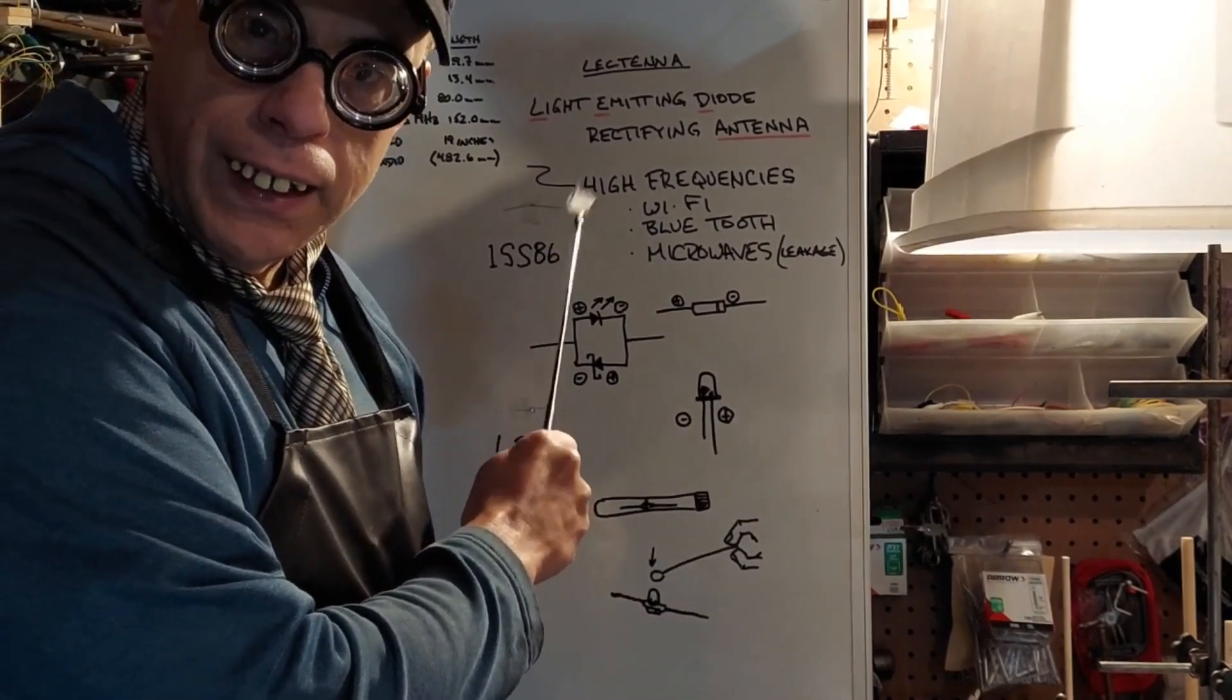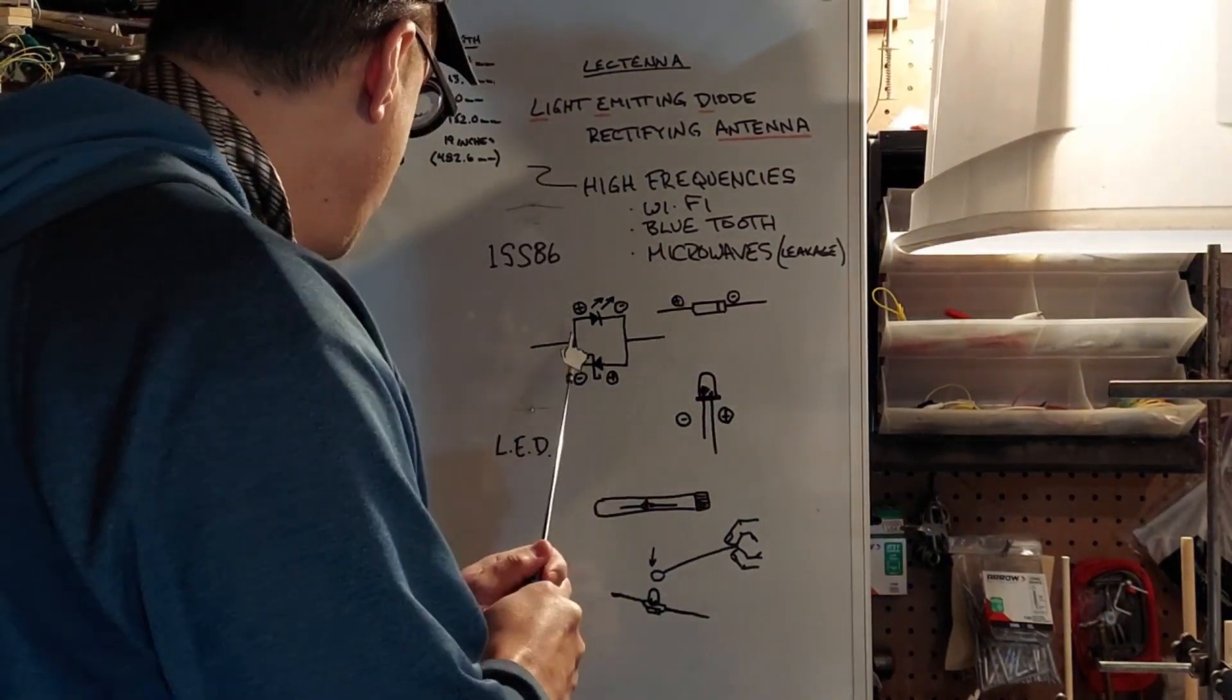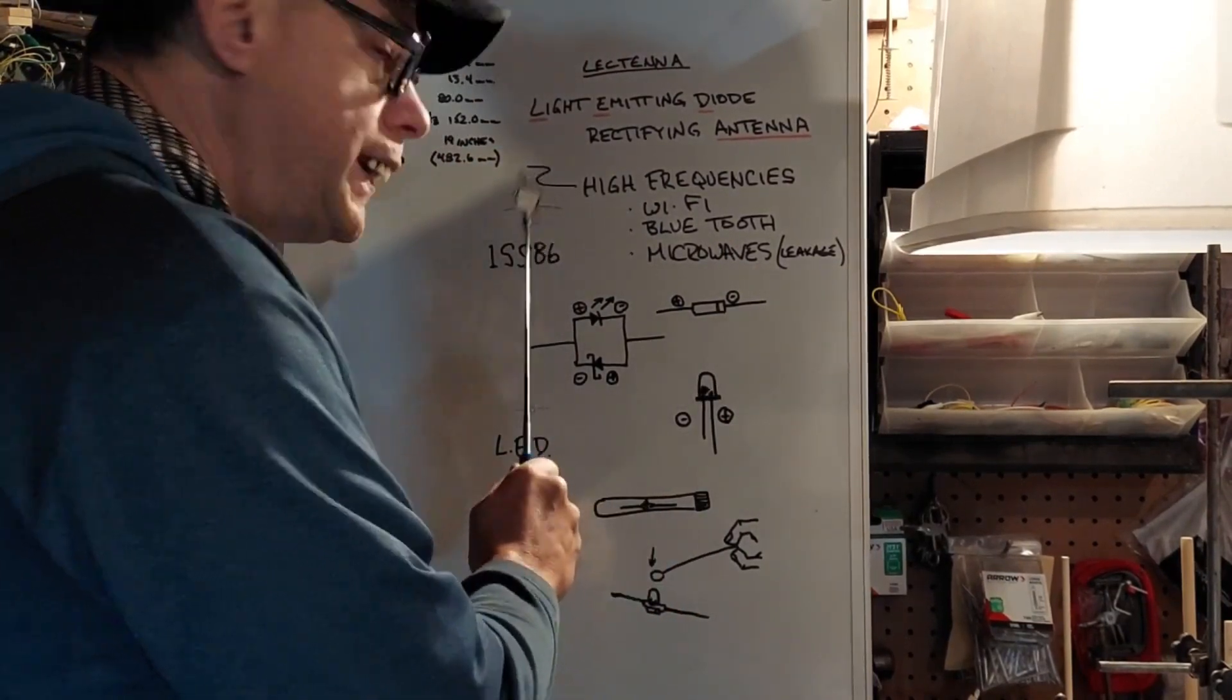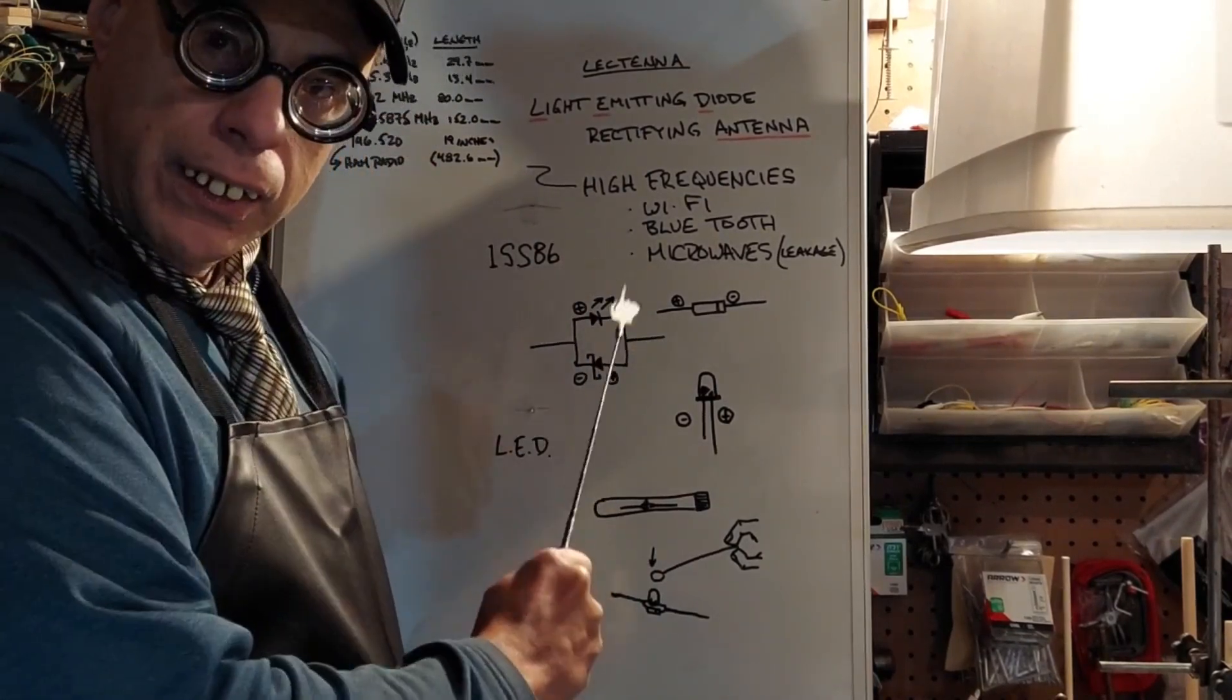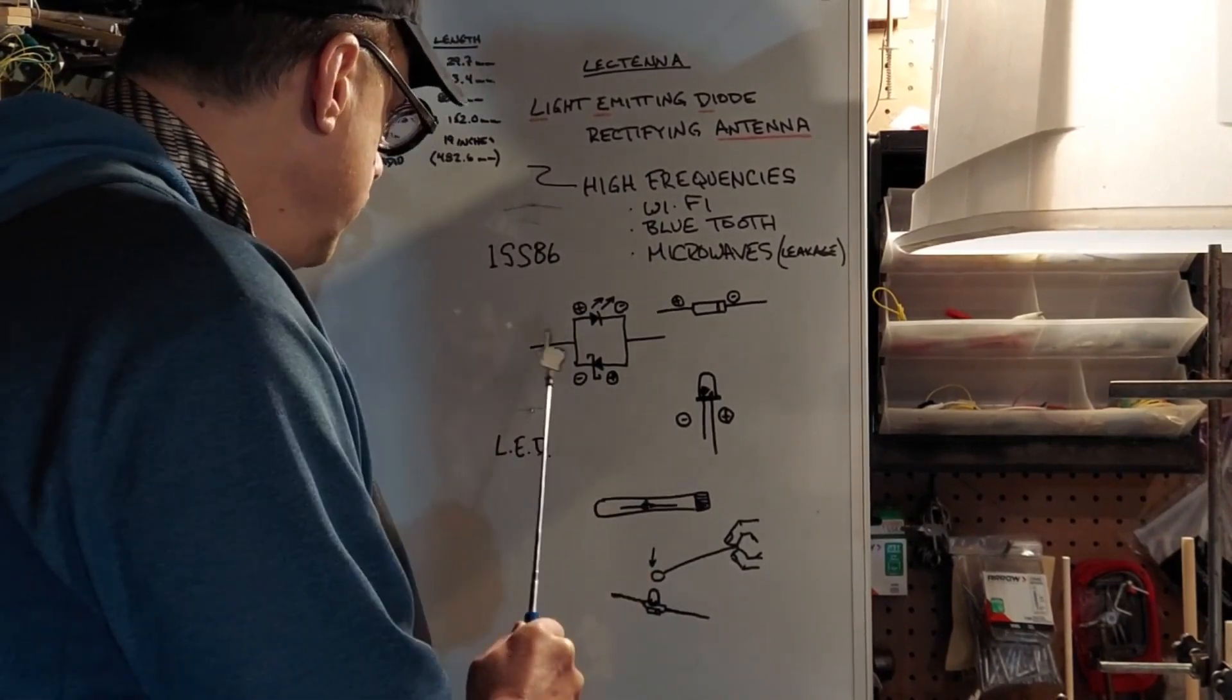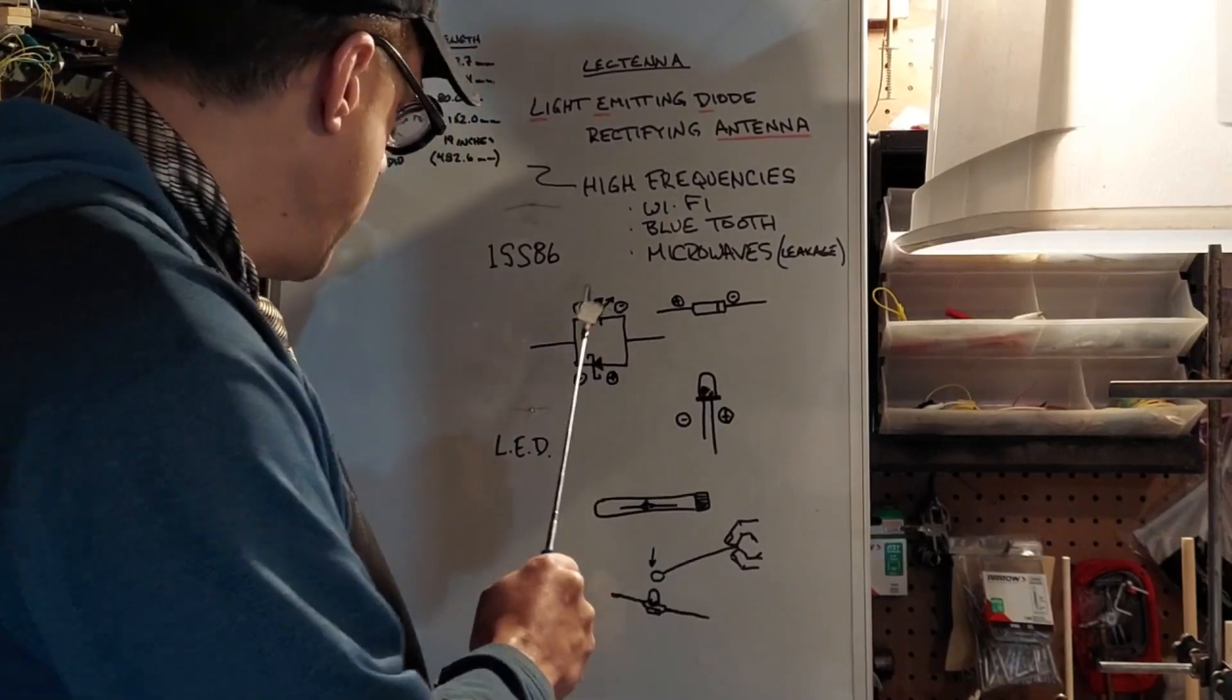We're using that 1SS86 diode and there it is, probably can't see it but it's there. We need to make this whole thing work by attaching the LED to the 1SS86 diode in this manner right here. This is kind of complicated looking - basically you want the positive of the LED hooked to the negative of the diode and you want the negative of the LED hooked to the positive of the diode, so it looks like they're going in circles or something over there.